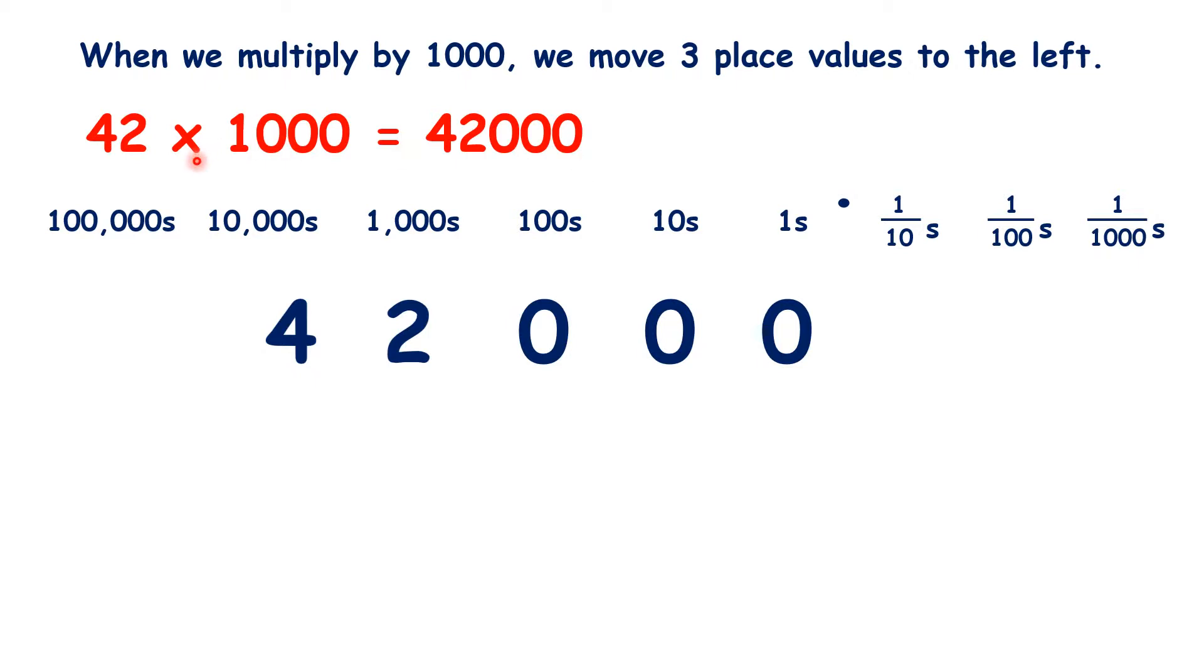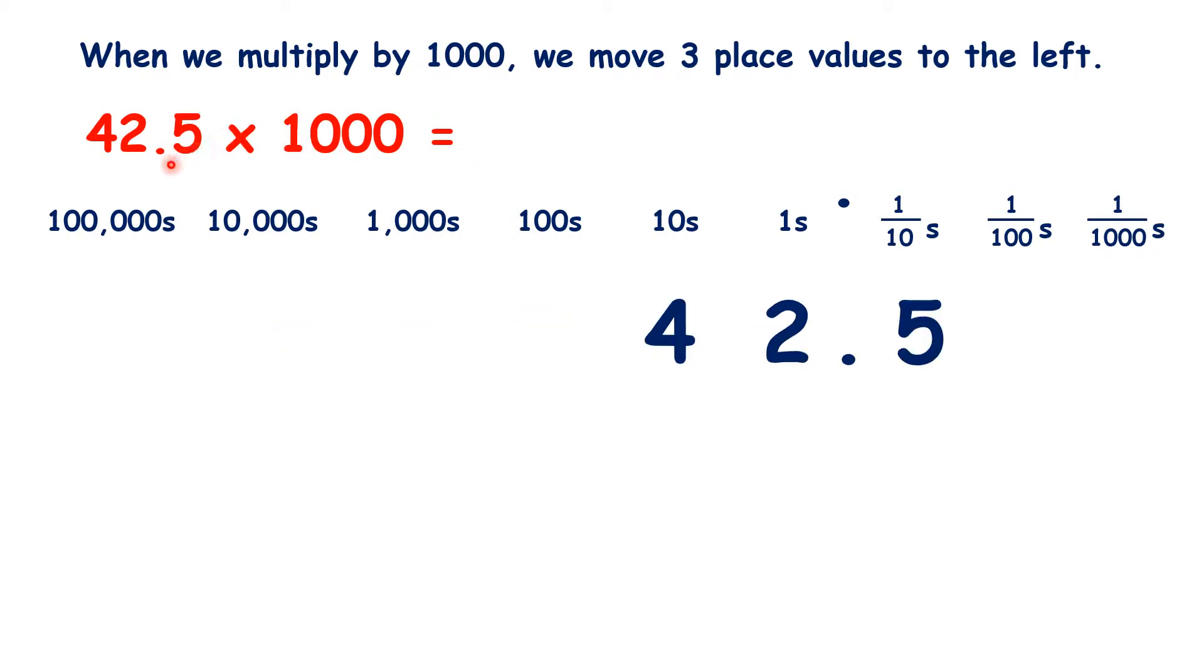So when multiplying by a thousand, it's important to remember that what's really happening is that the digits are moving, not just putting three zeros on the end. And that's especially important to remember when multiplying decimals by a thousand.